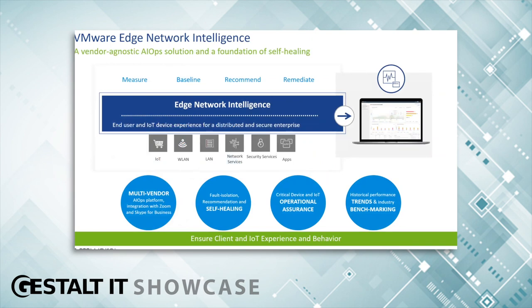I talked earlier about ENI. ENI is our AI ops platform. There are a number of different things ENI does, but it's important to understand how it does it, because that gives you an idea of the power of the data it has. ENI is able to gather data by connecting to a number of different information bases, and it can actually generate information by itself.